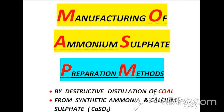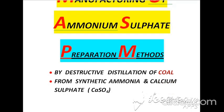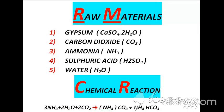Today I am presenting a lecture on the industrial manufacturing process of Ammonium Sulphate. Ammonium Sulphate may be produced with the help of two industrial methods. The first one is by destructive distillation of coal, and in the second method we may produce Ammonium Sulphate with the help of synthetic ammonia and calcium sulphate.